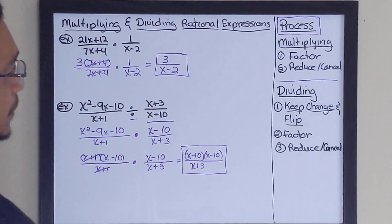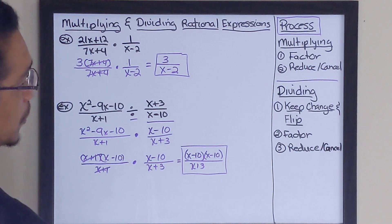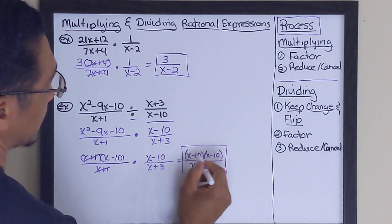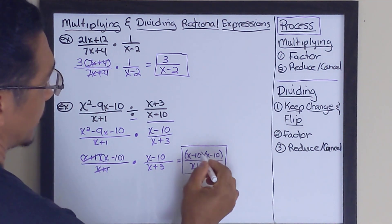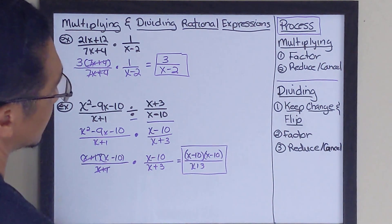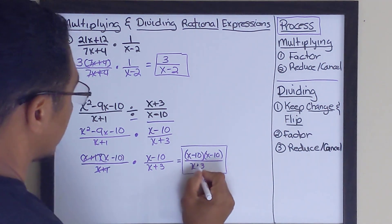Now, sometimes, depends, if you have a multiple choice question, this might be multiplied together and you'll get basically a trinomial when you multiply these two together, over x plus 3.